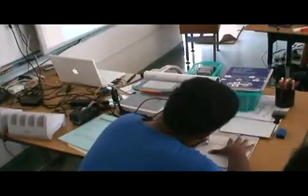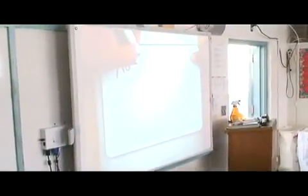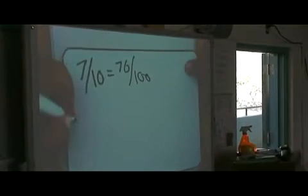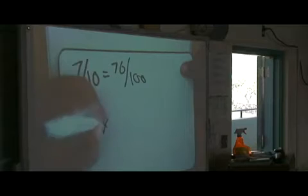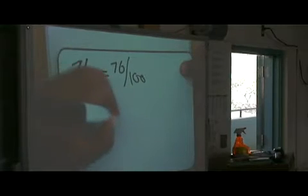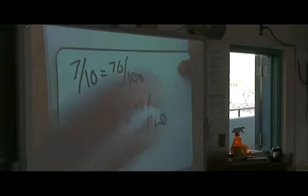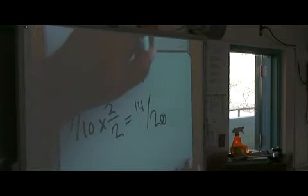70 percent equals 70 over 100. You can use 7 times 2 equals 14, and 10 times 2 equals 20. So what he has is the base of 7 over 10.